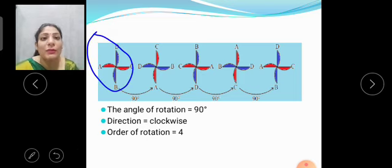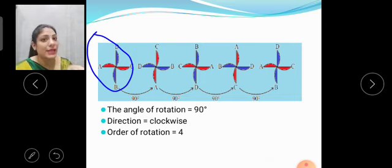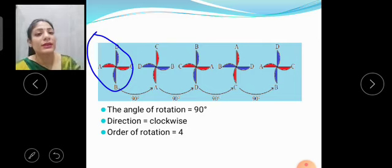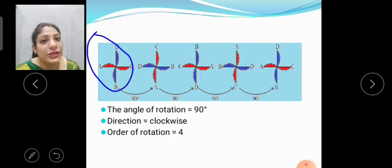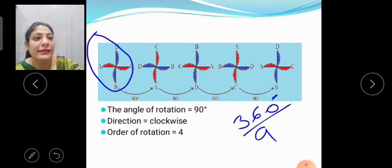So how many rotations are there to get back the real position? There are 4 rotations. So angle of rotation is 90 degrees, direction is clockwise and order of rotation is 4. Here in this figure, the order of rotation is 4. And we can find it by 360 divided by 90 also.